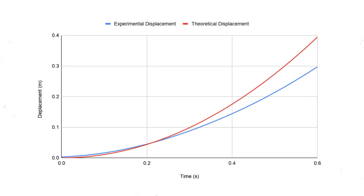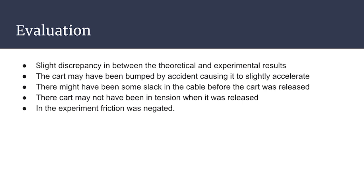From the theoretical time versus displacement graph, we can see that it follows an exponential curve. Both the theoretical and experimental data follow the same shape, meaning our findings respect the mechanics of dynamics. However, we can see a slight difference between the graphs. At 0.4 seconds, there is a theoretical displacement of 0.18 meters and an experimental displacement of 0.15 meters. When comparing the theoretical data to the experimental, we notice slight discrepancies within the data.